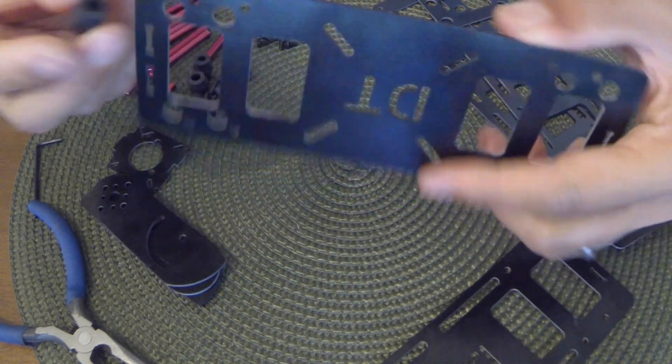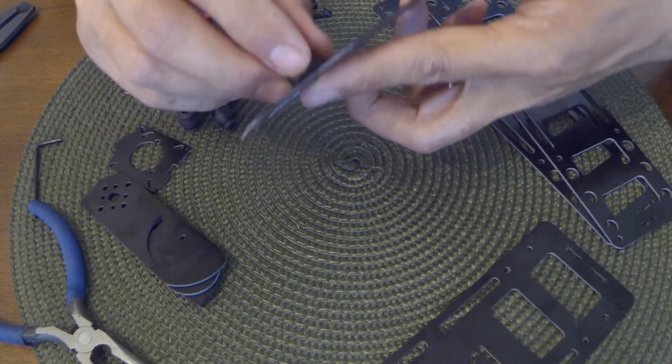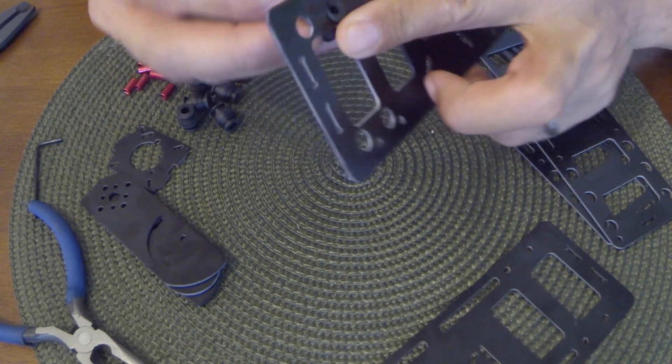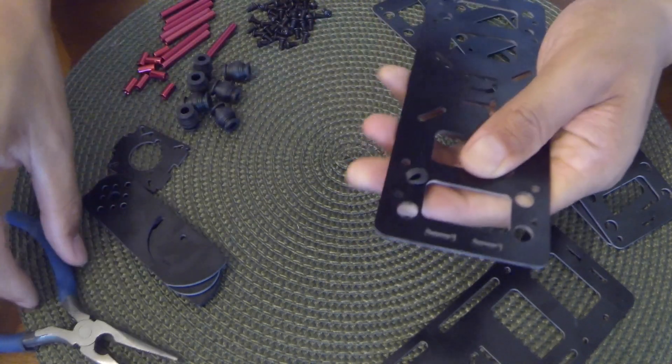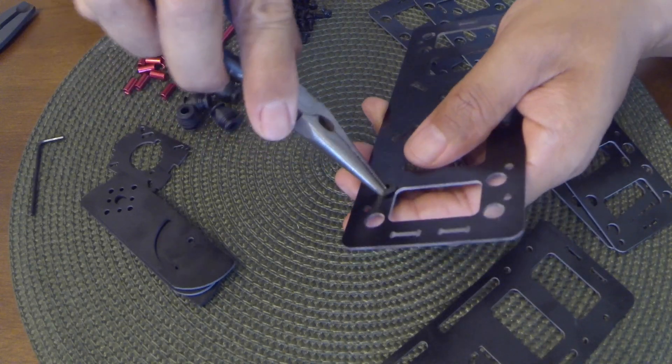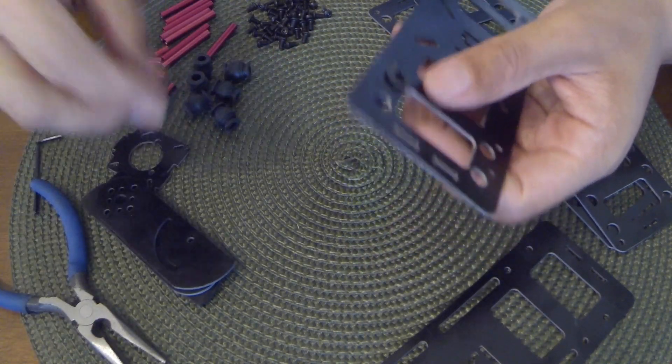So you're going to need to install eight of these rubber dampeners. They're kind of fiddly but you can use needle nose pliers to help you pull them through. Just be careful. They're kind of delicate. Try not to tear them.